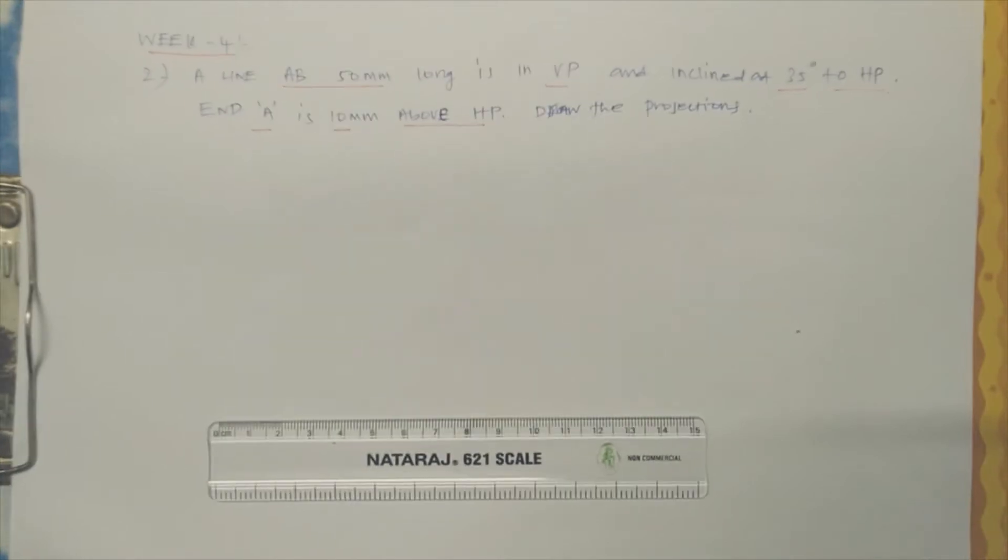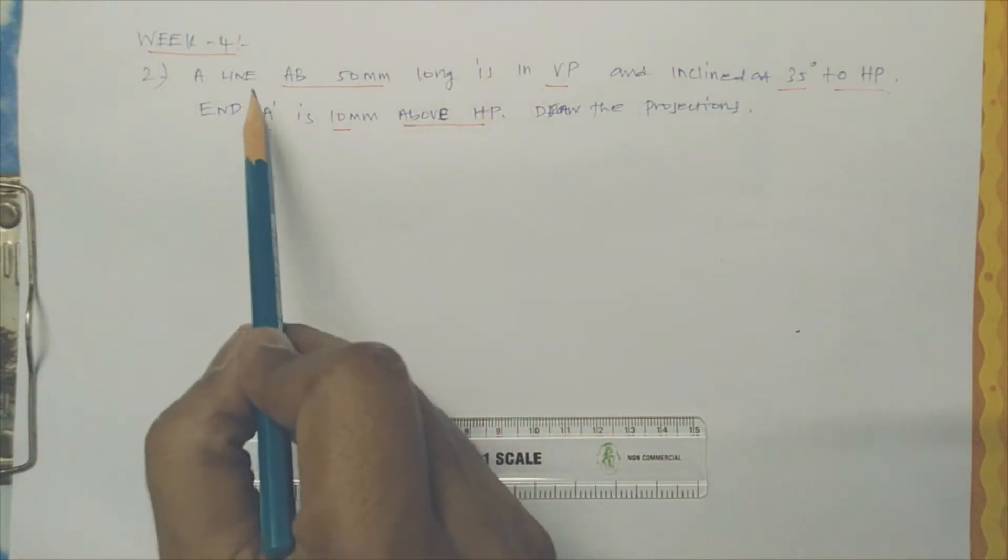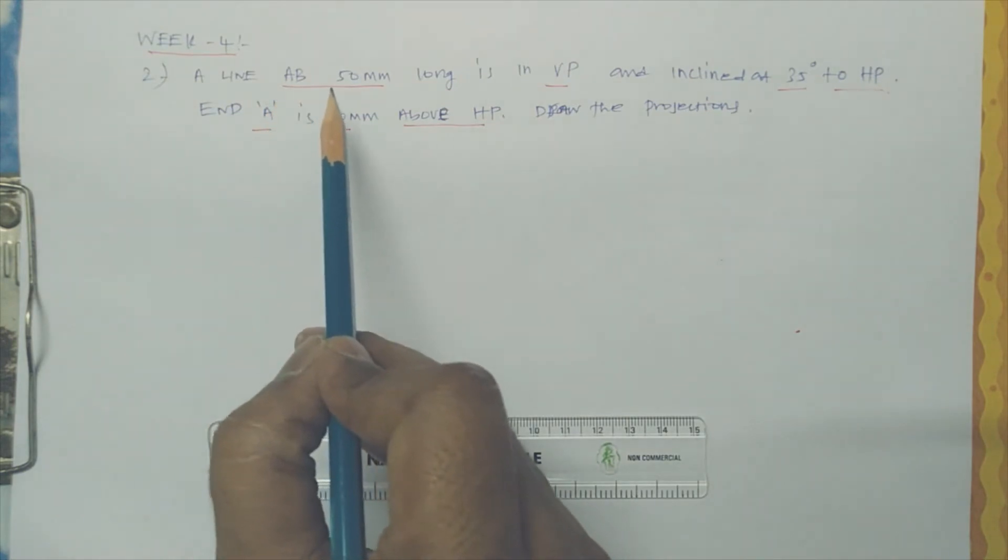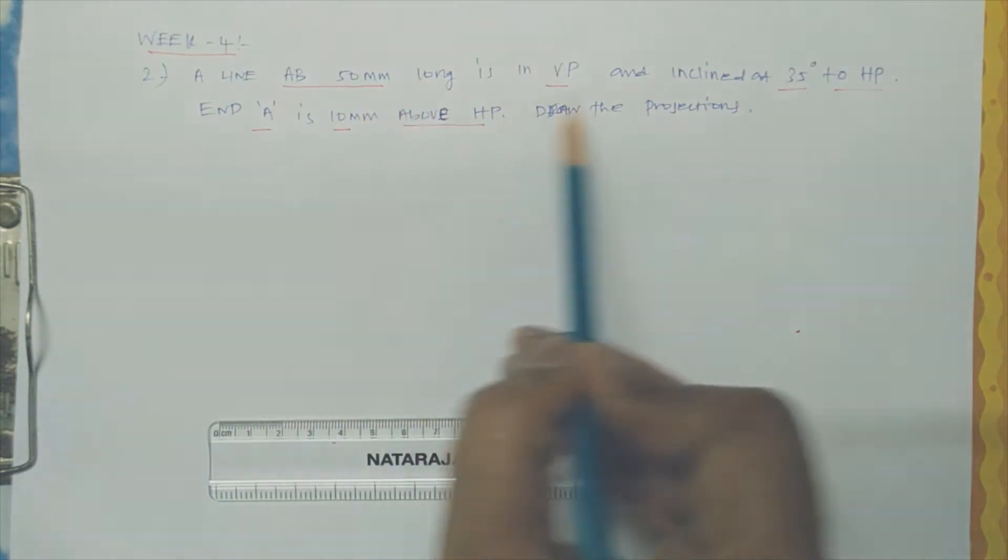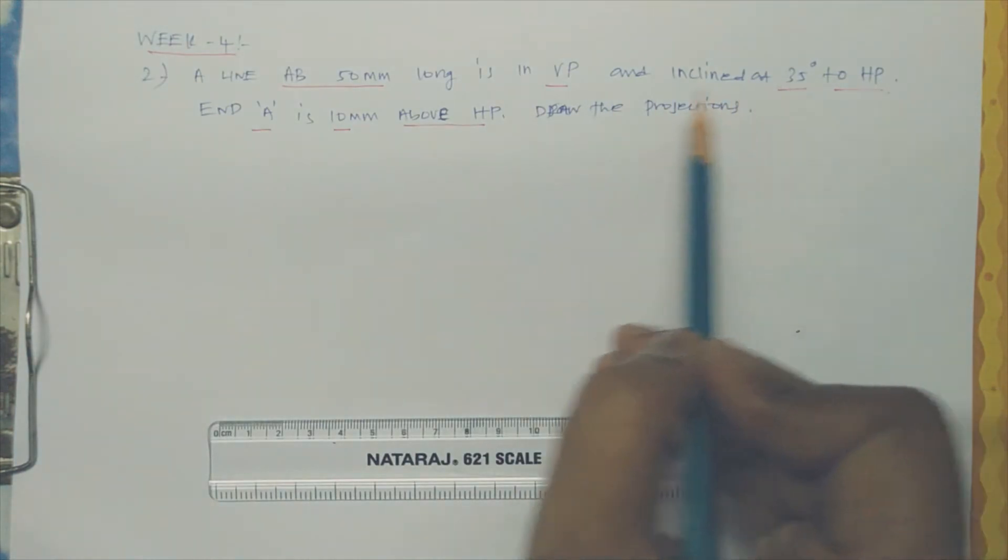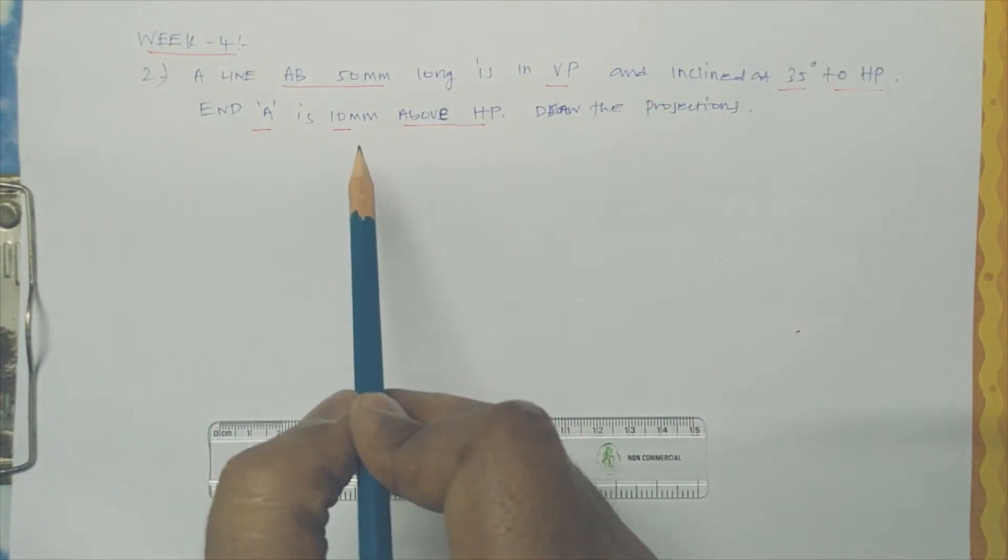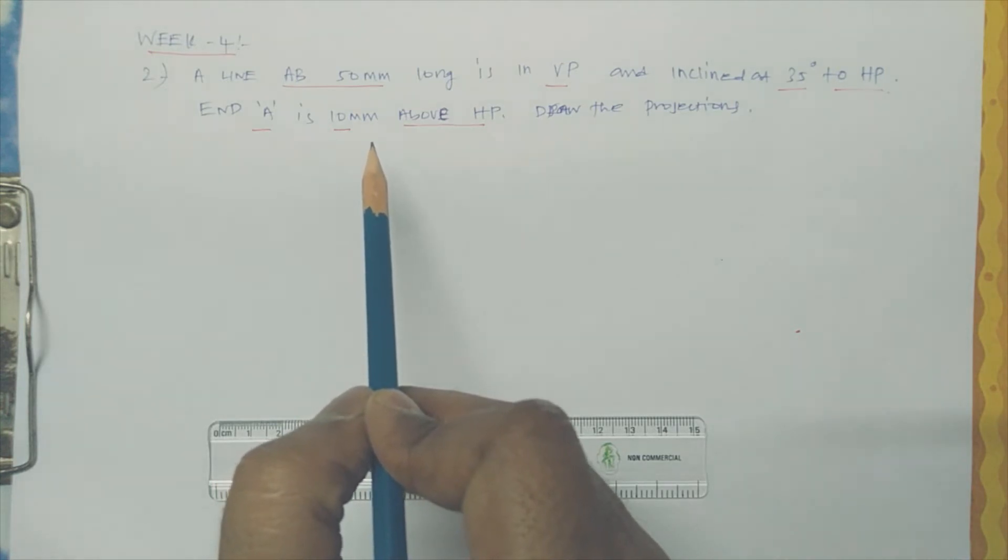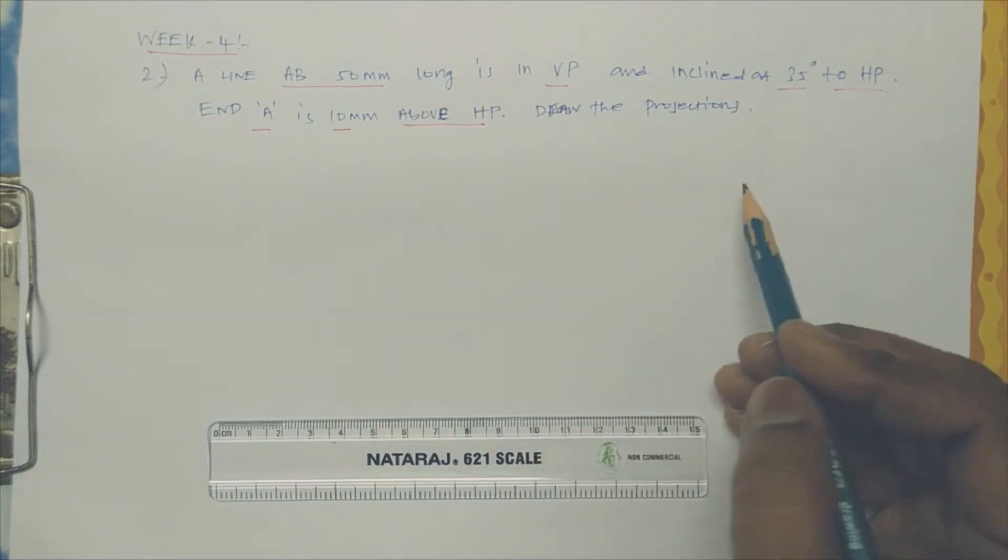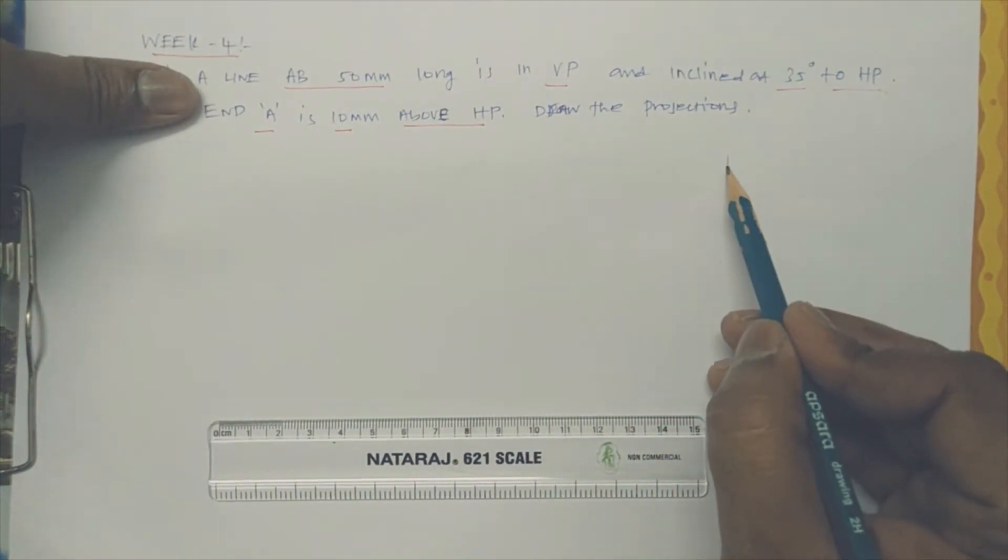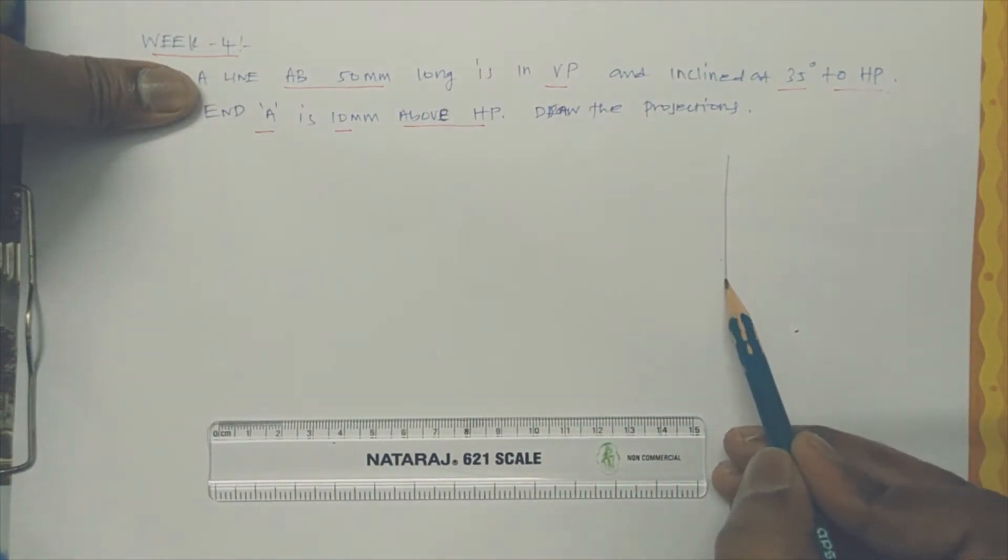Welcome students, this class we're going to discuss the projection of line. Here the projection of line is inclined with HP and above, and is straight when you are seeing from the top view. So we're just going to see the top and side view for this case.